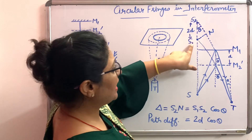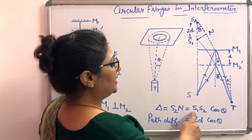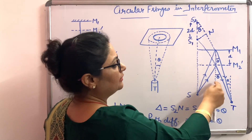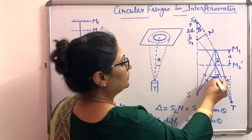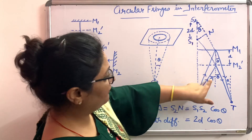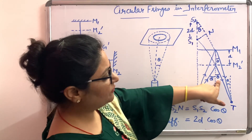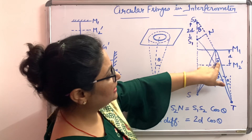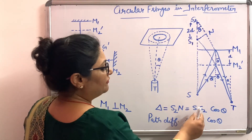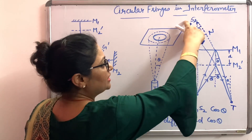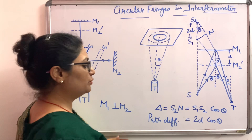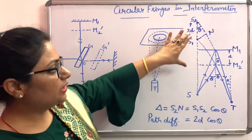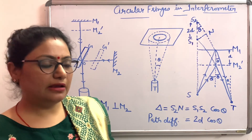From the geometry of the figure, if θ is the angle of incidence, the angle of reflection is also θ. Therefore, the path difference S2n = S1S2 cosθ = 2D cosθ, where S1S2 = 2D. So the path difference between the two rays reflected from mirrors M1 and M2 dash is 2D cosθ.